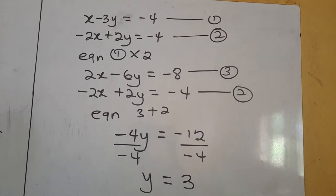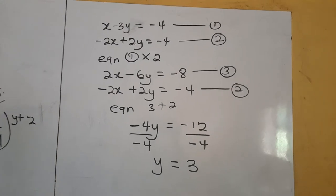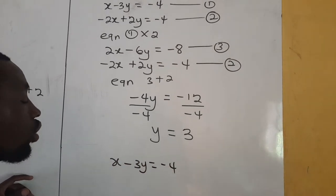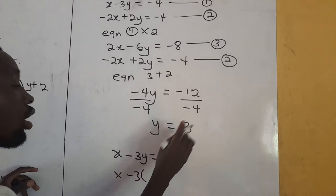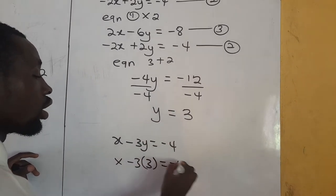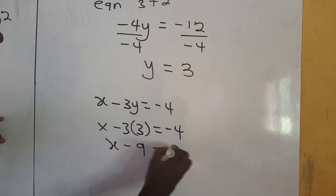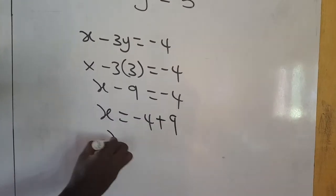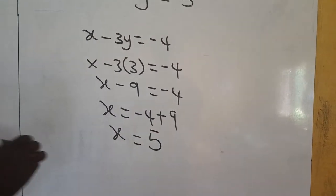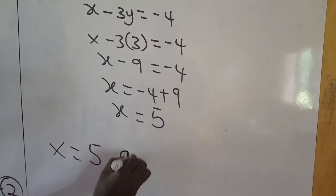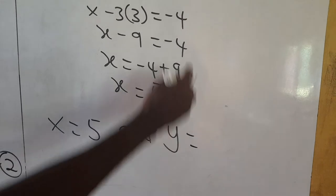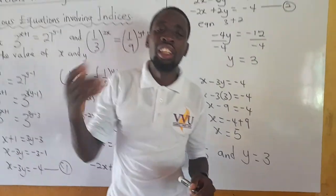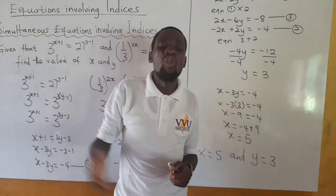Knowing the value of y, I substitute into equation 1 to get x. So x minus 3y equals negative 4. In place of y I substitute 3: x minus 3 times 3 equals negative 4, so x minus 9 equals negative 4. Therefore x equals negative 4 plus 9, which gives x equal to 5. Our x is equal to 5 and our y is equal to 3. I hope you get that. Please play over the video and I know you'll get it.